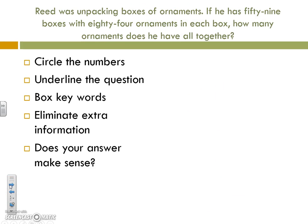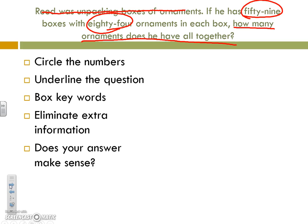Next, Reid is unpacking boxes of ornaments. If he has 59 boxes with 84 ornaments in each box, how many ornaments does he have altogether? We want to know how many ornaments he has altogether. We don't need to know that he was unpacking boxes of ornaments to help us solve the problem.